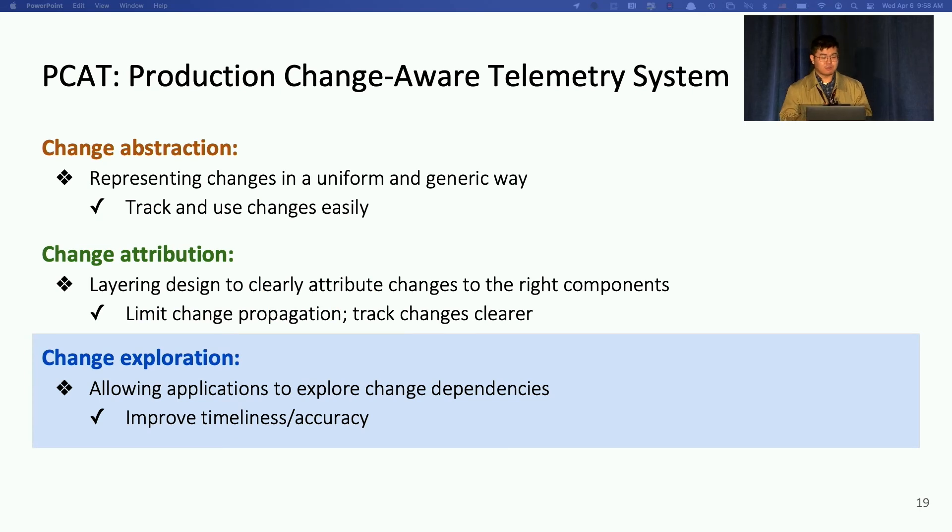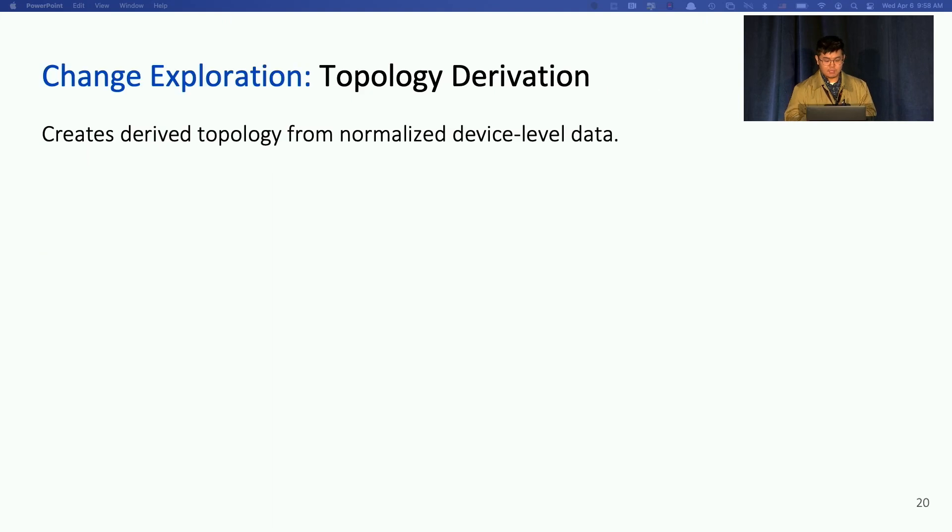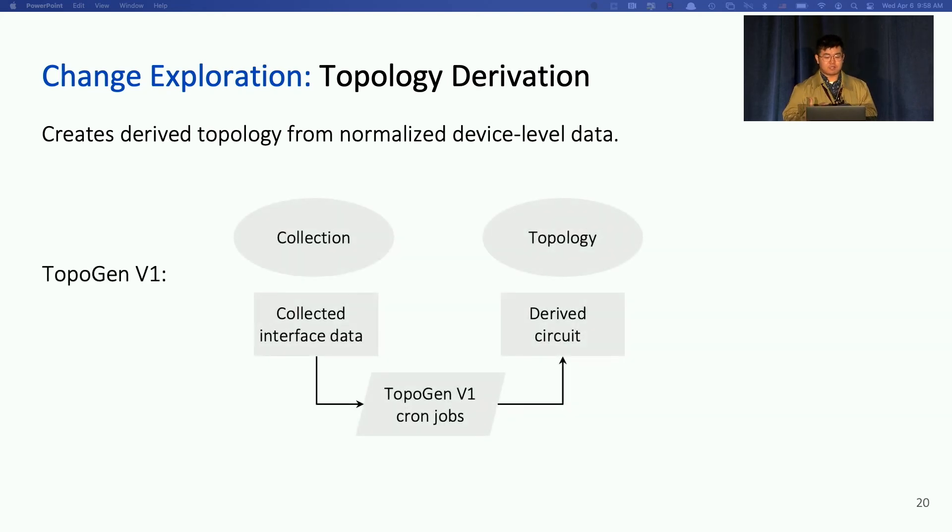So the last component of PCAT is about change exploration, where we show that application can benefit from tracking changes or change cubes explicitly and clearly. We have an application called Topology Derivation Service. It creates derived topology from device-level data. For example, based on the per-interface data, TopoGen derived circuits to construct current network topology. Previously, we had TopoGen job running periodically, which causes outdated derived topology because of the periodic running nature.